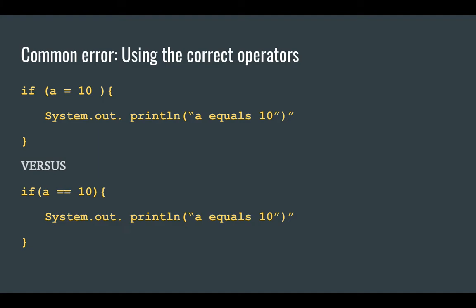Another common mistake is writing 'if A = 10' versus 'if A == 10.' In Java, using a single equals in an if statement won't compile — it'll throw an error. In JavaScript however, it will execute, treating it as a true statement because it assigned 10 to A. Java is strongly typed and will not allow it. Also important: logical AND takes precedence over logical OR. Always use double ampersand (&&) for logical AND and double pipe (||) for logical OR — single versions are for bitwise operations, which we won't cover in this class.